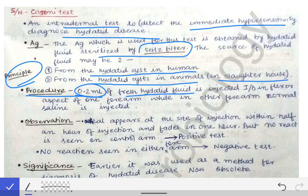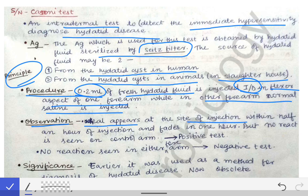The procedure is that 0.2 ml of fresh hydatid fluid, which has been sterilized by the Seitz filter, is injected intradermally into the flexor aspect of one forearm, while in the other forearm normal saline is injected as a control.